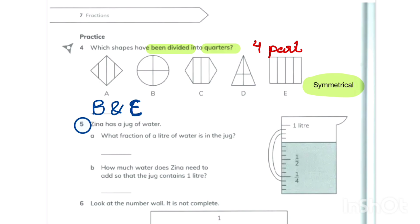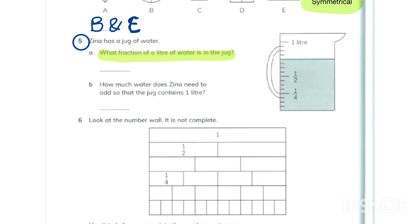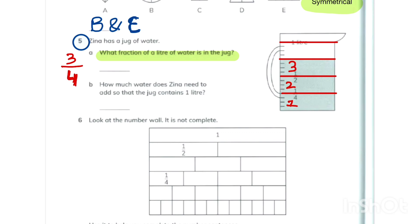In question number 5 we have a jug of water and we decide what fraction has water. There are four parts, so the denominator is four, and three parts have water, so we write three upon four. For how much water Zina needs — how much is empty — there are four total parts and only one part is empty, so we write one upon four.